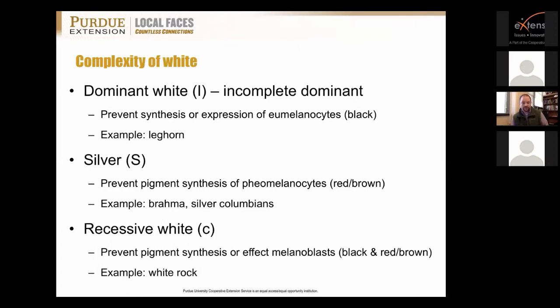There is also recessive white as a third gene, which prevents the pigment of any melanocytes — no reds, no browns, and no blacks. An example is the white rock. So we have three different white mechanisms: the white rock with recessive white, the leghorn with dominant white, and brahmas or Columbians expressing the silver gene.